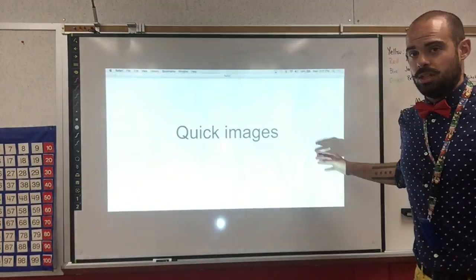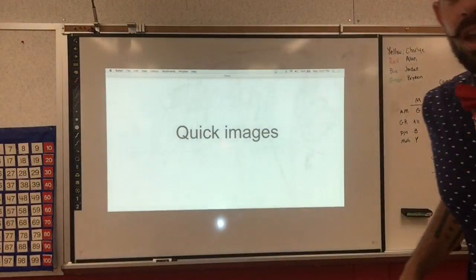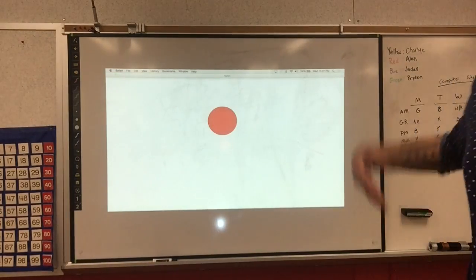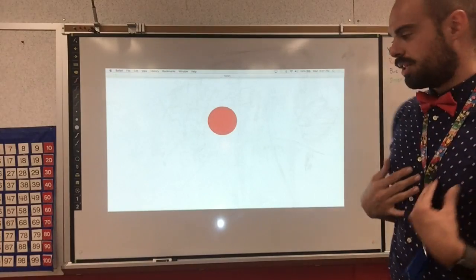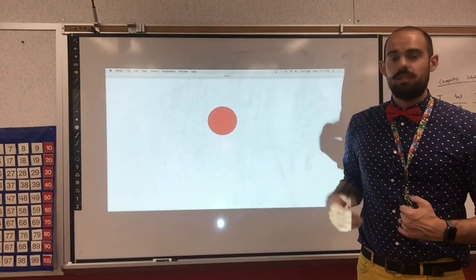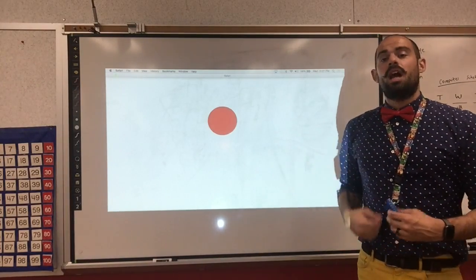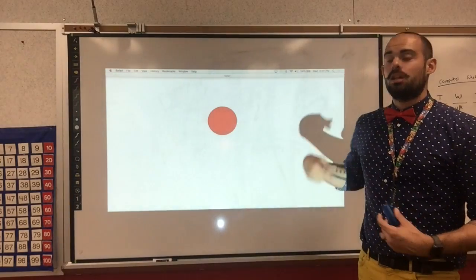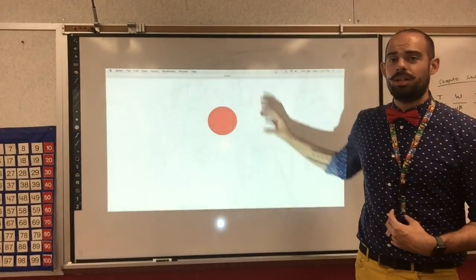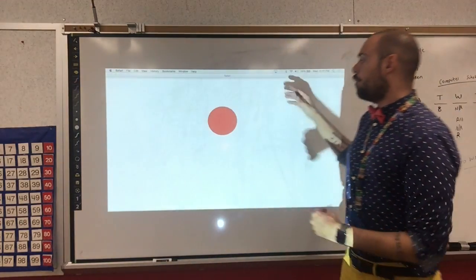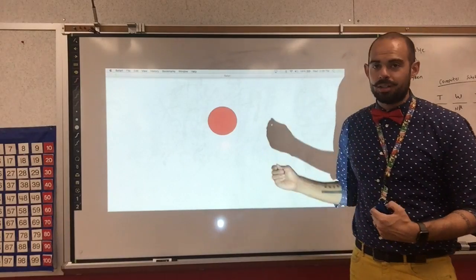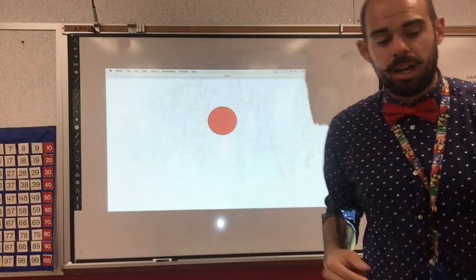I call it quick images. I show them the image quick and then we talk about it. So this one, here's a couple of questions that I would ask. I would say, what do you see? Of course, they would say one. And then I would say, how do you see it? I see there's one dot on the screen. That's easy. This one is sort of like the control in the science experiment. You start with one. Everybody can count one. So it moves on from there.